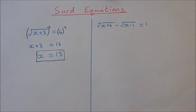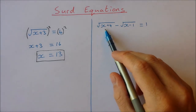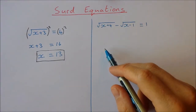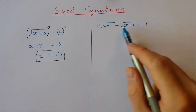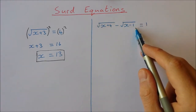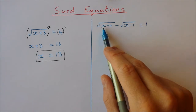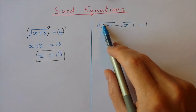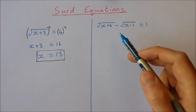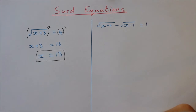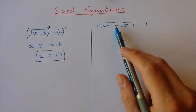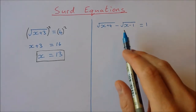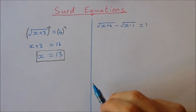Now for the other one it's a little bit trickier — we have to first isolate one of the square roots and then square both sides. If we were to square both sides right now, it would be this whole thing squared: the square of the first, twice the product, and the square of the last — so we'd be multiplying the square root of x plus 4 by the square root of x minus 1, and that's not really going to help us.